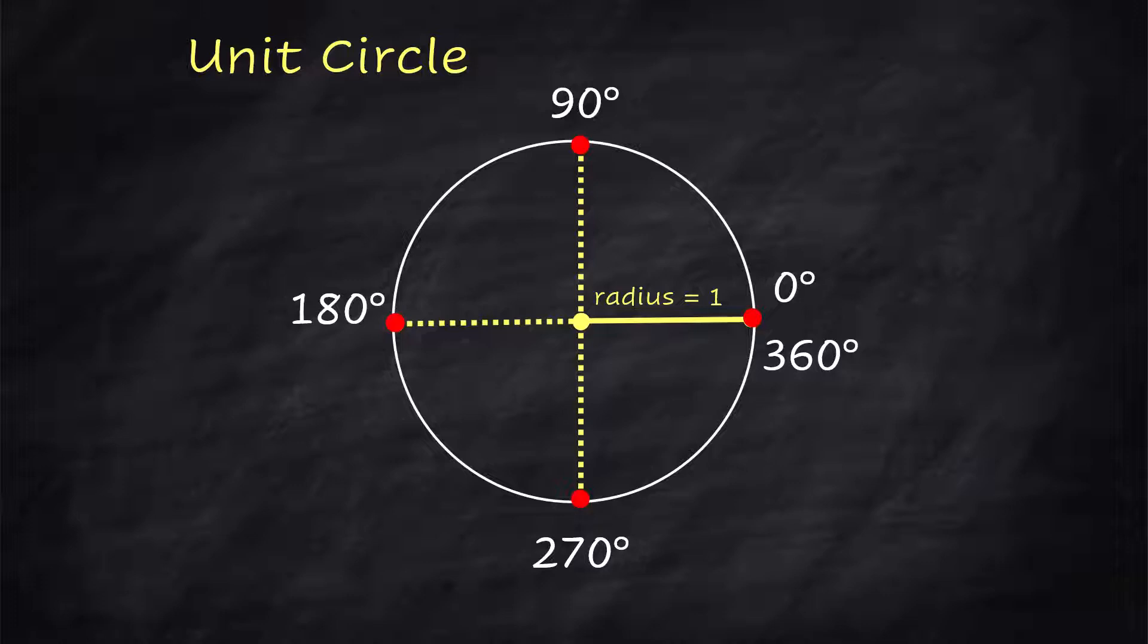And yeah, 0 and 360 are in the same place. So you have to keep track of the context of anytime they ask you, are you starting from 0 or have you gone one full rotation already? So that's four points on the unit circle. Let's find the other 12.